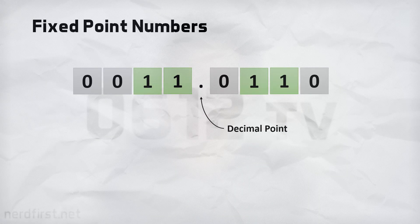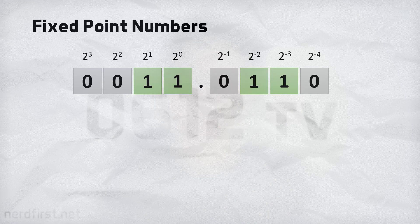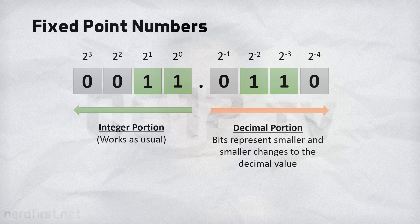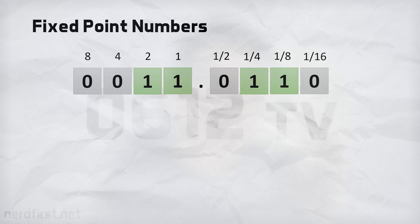The easiest way to do decimal numbers is to simply change up those powers of 2. What we can do is assign a decimal point smack in the middle. The left side of the decimal point is where our normal powers of 2 go. On the right side, we have negative powers of 2 — so this is half, this is a quarter, this is an eighth, this is a sixteenth. And you can start to have decimal numbers.